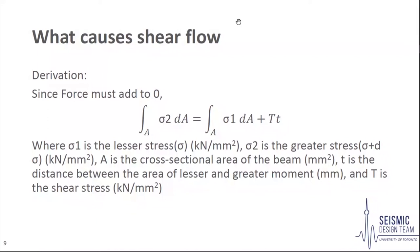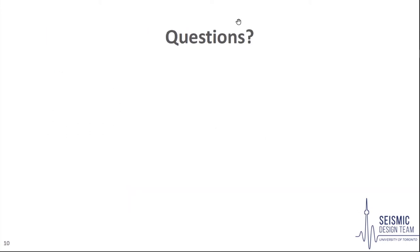To develop a formula for the shear stress developed by this imbalance, equilibrium must be analyzed. The lesser stress region may be denoted by sigma1, and the greater stress region, sigma plus d sigma, may be denoted by sigma2. The forces must be balanced in the element: the integral of sigma2 over the cross-sectional area must equal the integral of sigma1 over the cross-sectional area plus the shear stress multiplied by the length of the section — that is, the difference between the areas of greater and lesser moments. Does anyone have any questions about how we developed this formula?